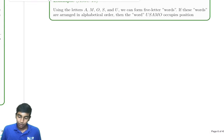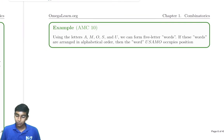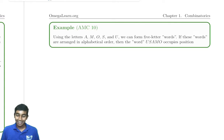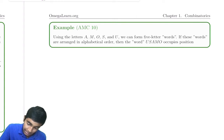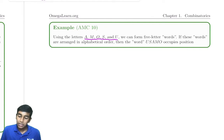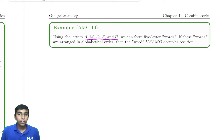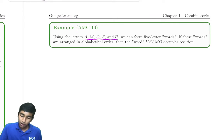Next, we have a problem from the AMC 10. Using the letters A, M, O, S, and U, we can form five-letter words. If these words are arranged in alphabetical order, what position does USAMO appear in?